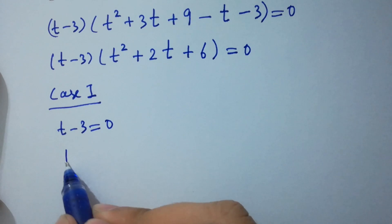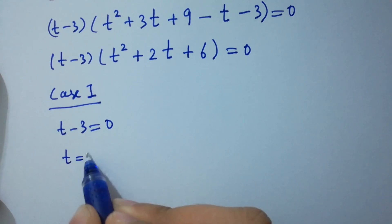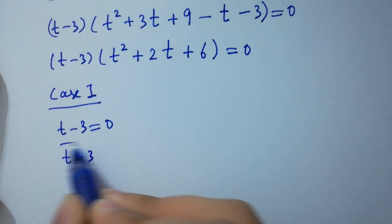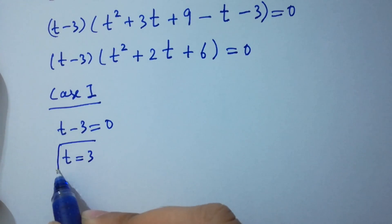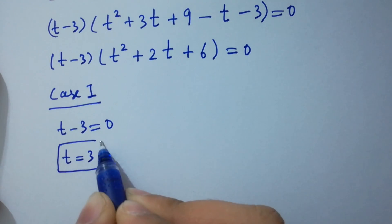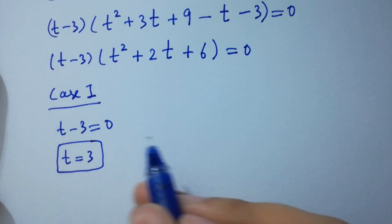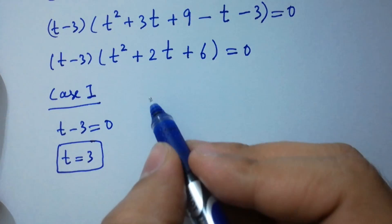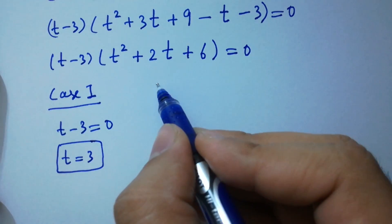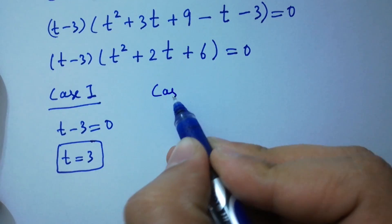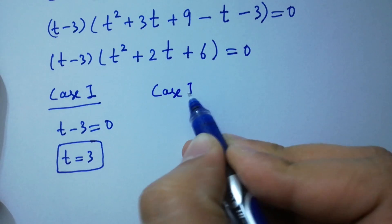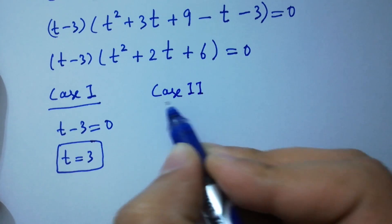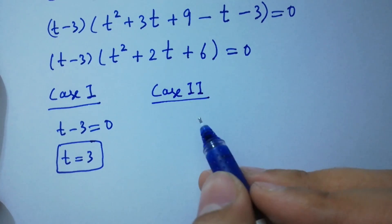Either we have Case 1: t minus 3 equal to 0, where we get t equal to 3, which is the real solution.